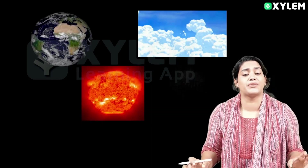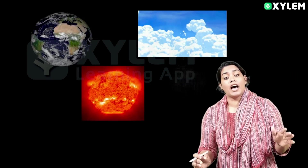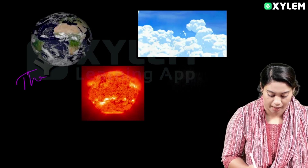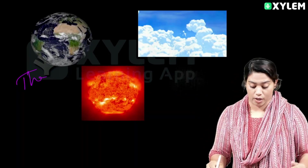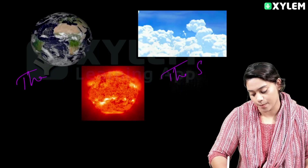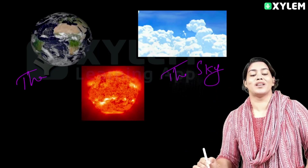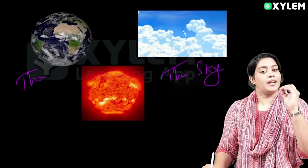We call it 'the moon' because it is specific — there is only one moon. That is what we call specific. The Earth. We call it 'the sky' — sky is a specific one, so we call it 'the sky'. Next one: the moon, the sun. We use 'the' for unique, specific objects.